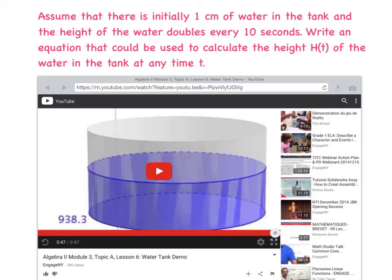Well, we're going to try it first here on this slide. What I've tried to do is I've tried to embed a video just within our video. And we're going to give it a shot. We'll see if it works. But here's the story. It says, assume that there's initially 1 centimeter of water in a tank and that the height of that water doubles every 10 seconds. And as soon as you see the word doubles, you kind of got this feeling that it's exponential in behavior. They want you to write an equation that can be used to calculate the height of the water in the tank at any time t. So let's go ahead and I'm going to try to play this video here if I can.